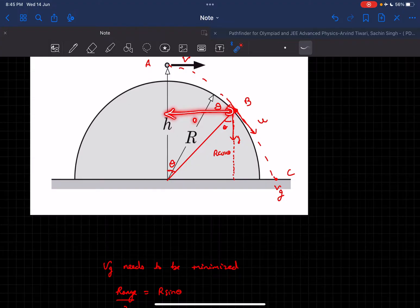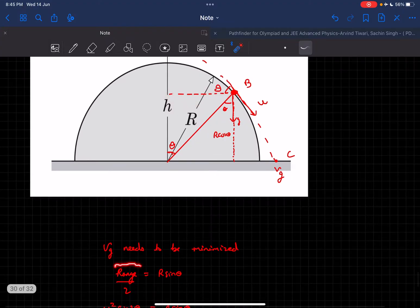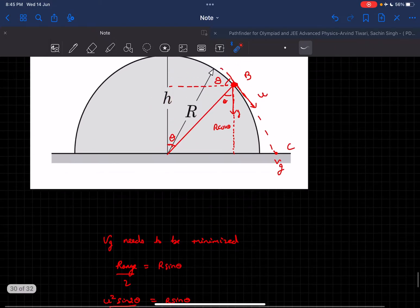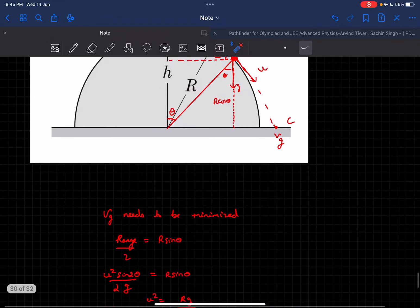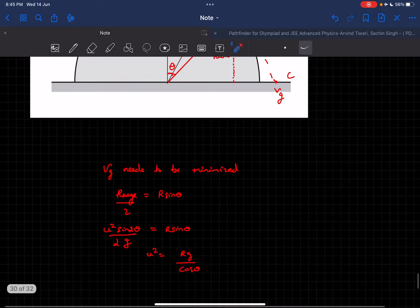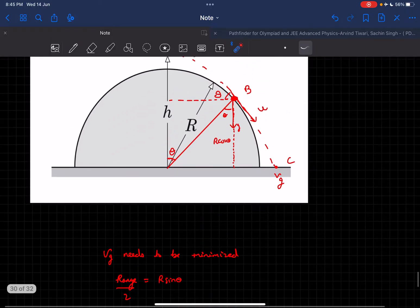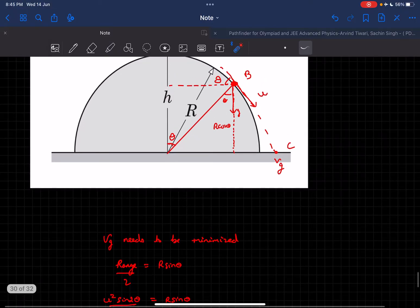The range over two can be found from this triangle to be R sin(theta). The range formula is u² sin(2theta)/g. Substituting this, we get u² = Rg/cos(theta).